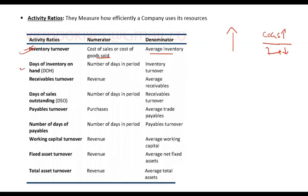Days of inventory on hand tells you how many days it takes to convert your inventory into a sale — or to sell your inventory. It is calculated as the number of days in the period divided by inventory turnover. For one year, that would be 365 divided by inventory turnover.